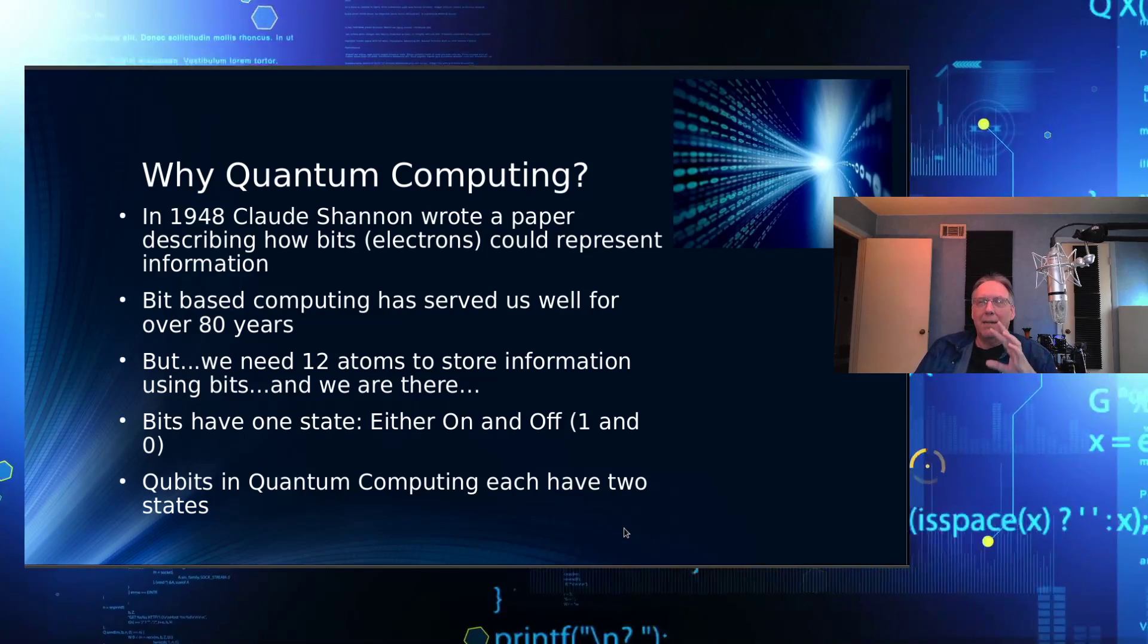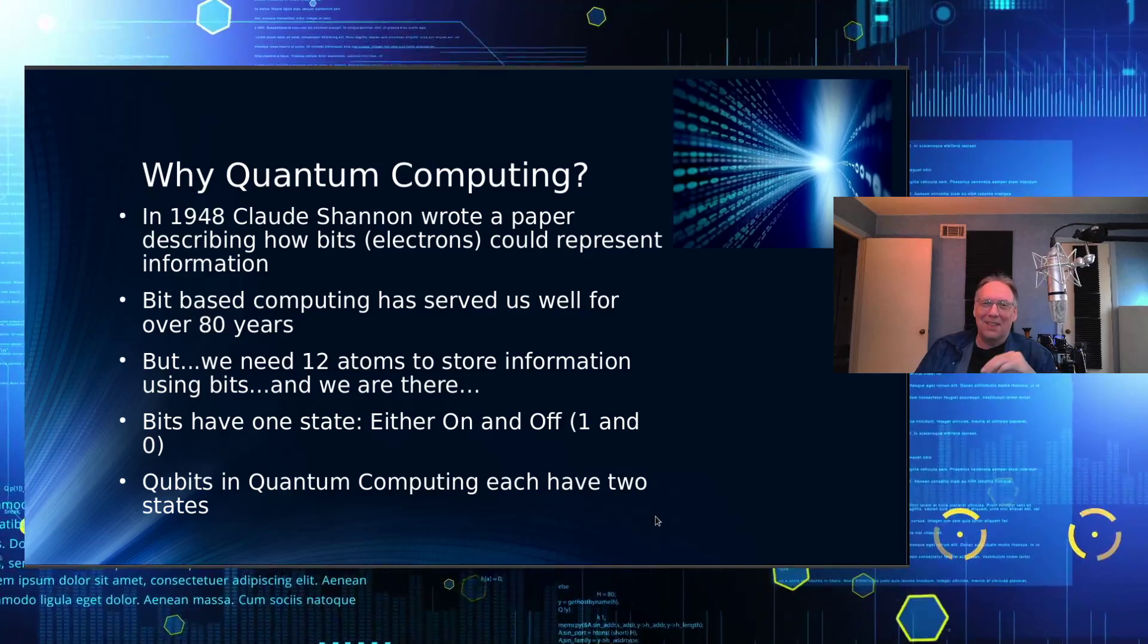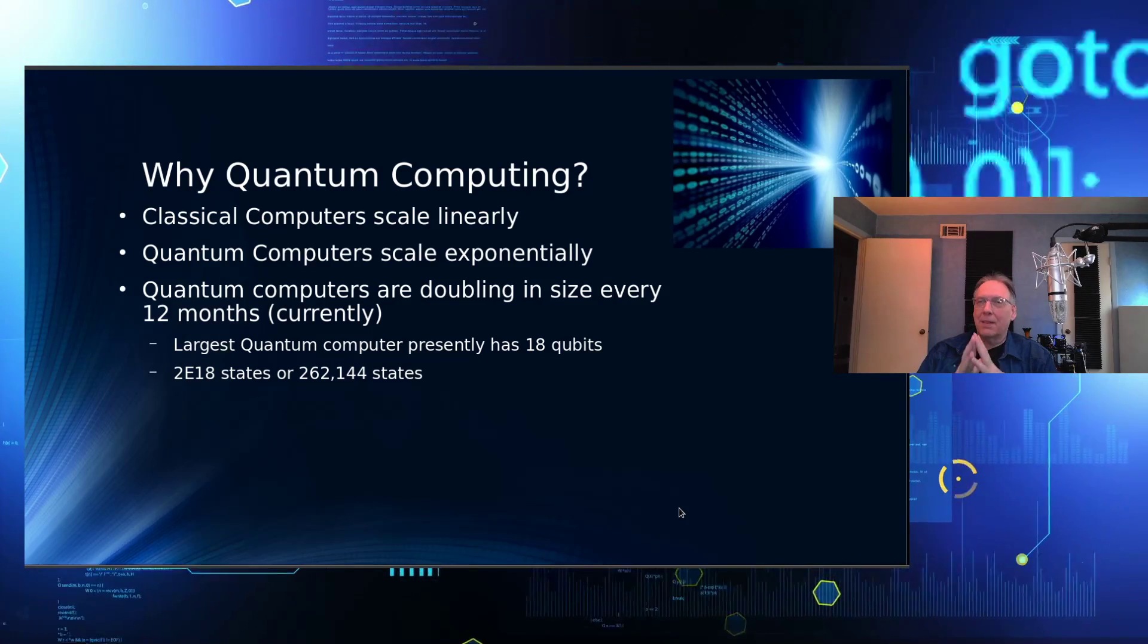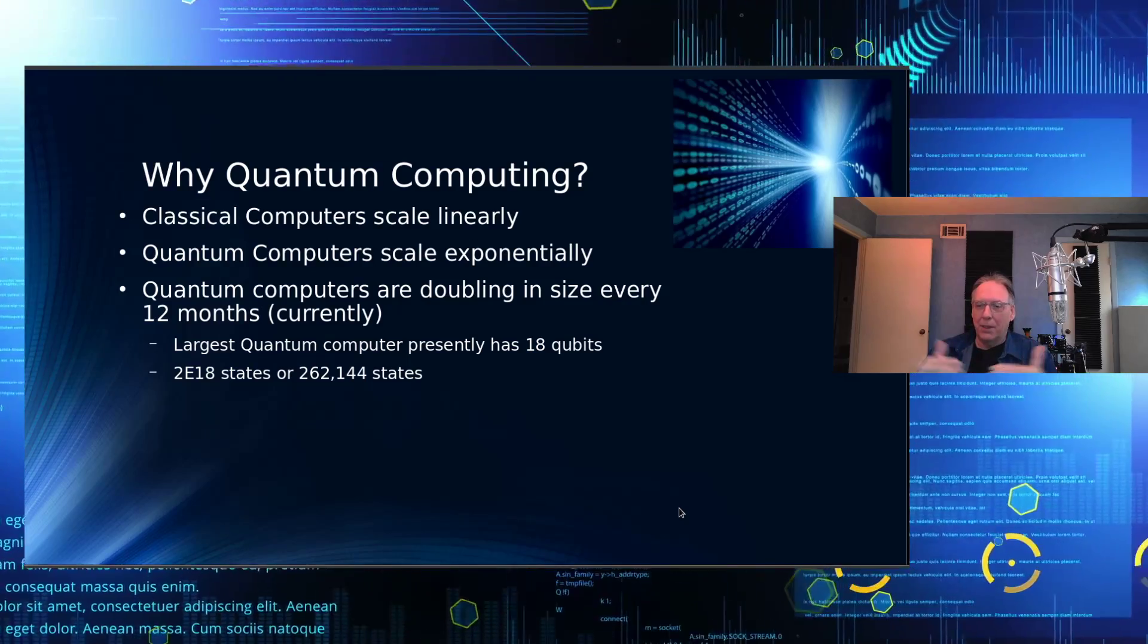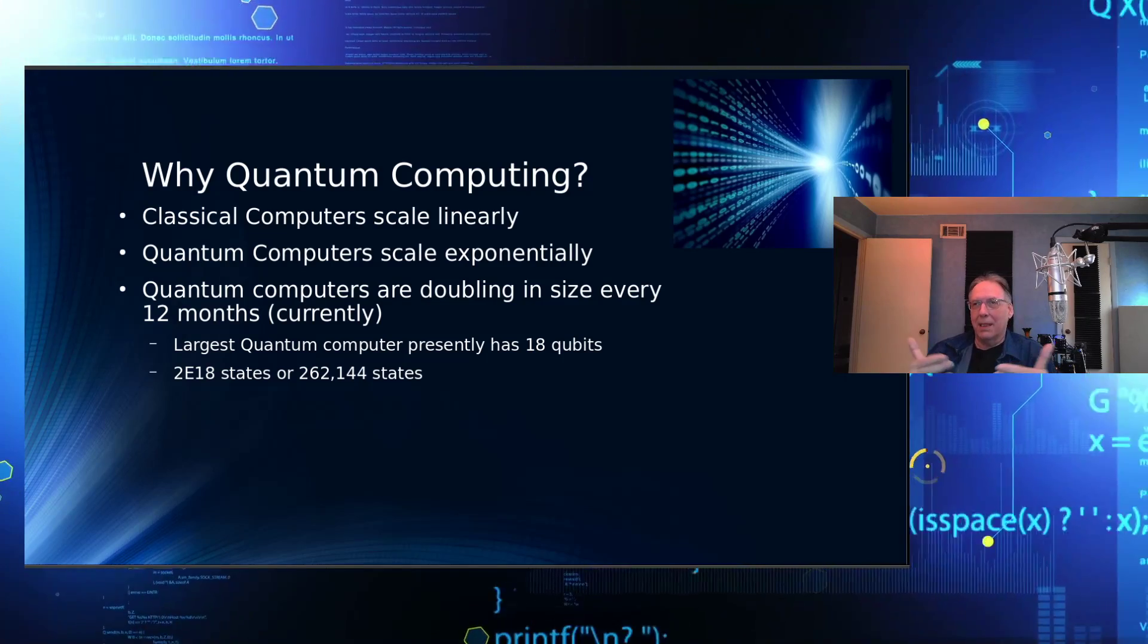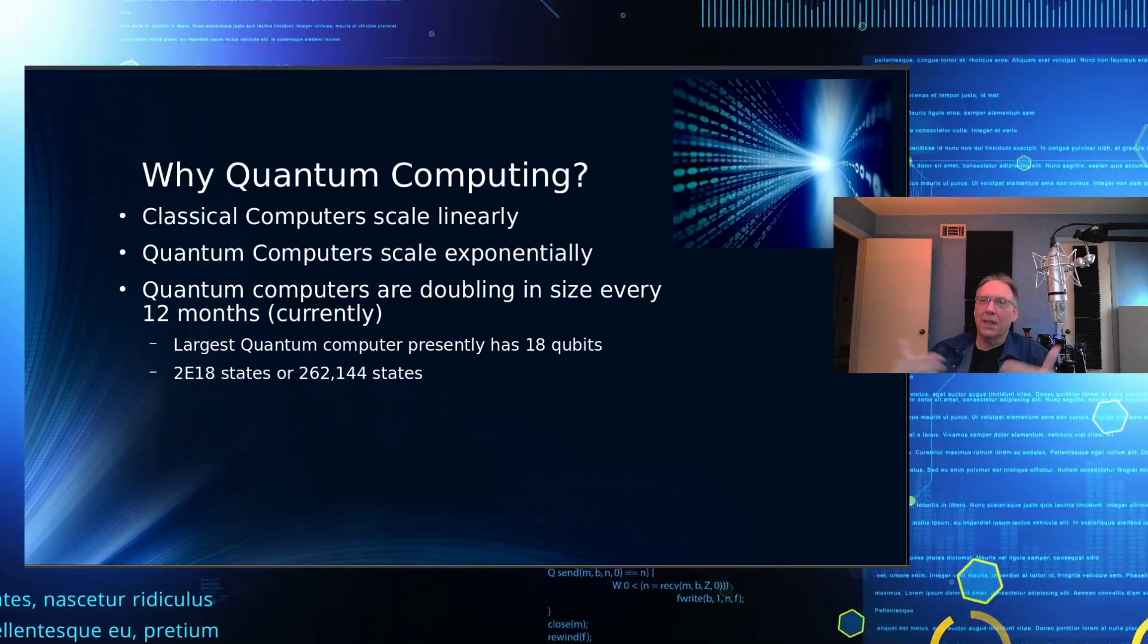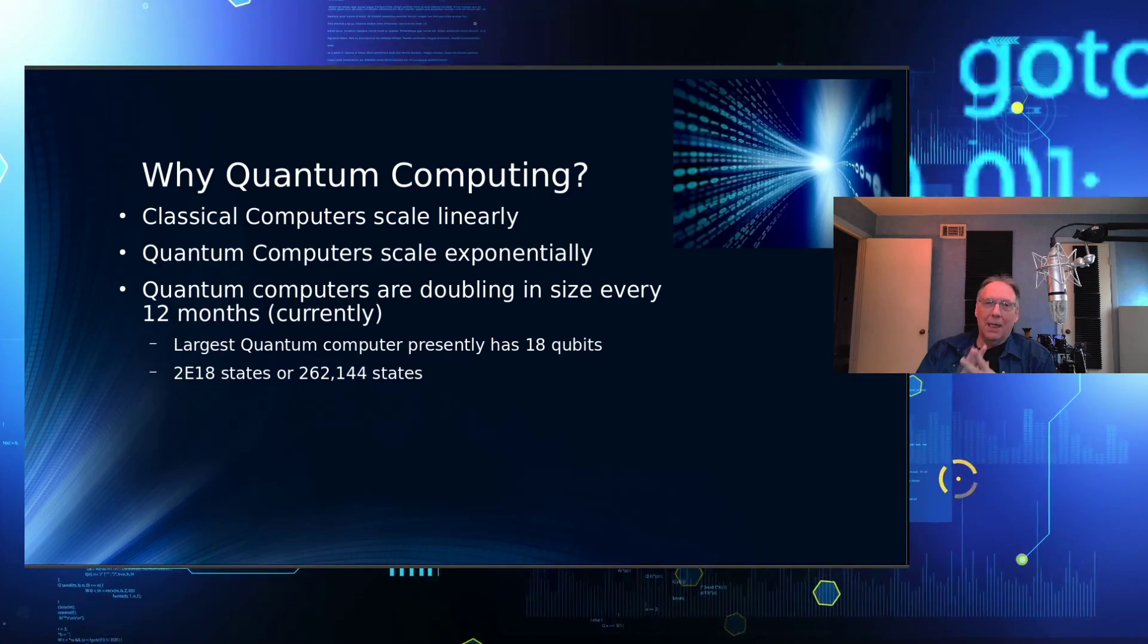Although most of the explanations I've seen on YouTube are horrible. But basically, let's look at it this way. Classical computers scale in a linear motion. In other words, in order to double the amount of data, I have to double the number of bits. So obviously, a 32-bit computer stores less than a 64-bit computer. A 64-bit computer stores less than 128. But those are linear scales up the ladder.